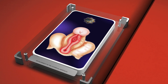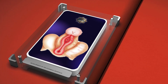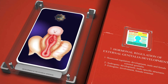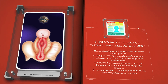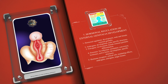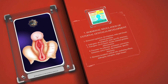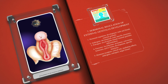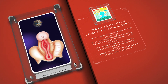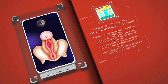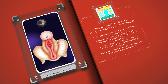Hormonal regulation plays a vital role in the development of male and female external genitalia. Androgens, such as testosterone, are responsible for the development of male-specific structures, while estrogens are involved in female external genitalia differentiation. Enzymes such as 5-alpha reductase and aromatase convert hormones to their active forms, influencing the development of specific structures. Hormone receptors also play a critical role in mediating the effects of androgens and estrogens on target tissues.